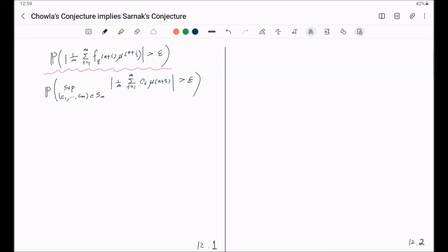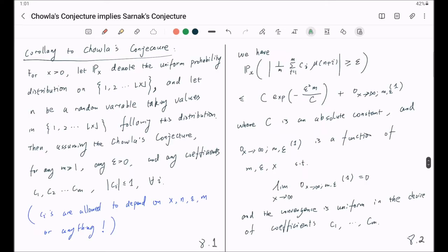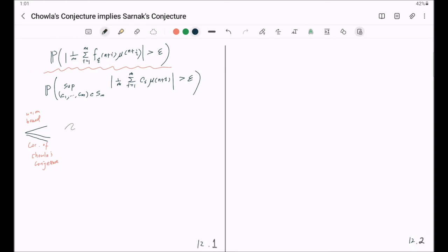By using a union bound, together with the corollary of the Chowla's conjecture we proved, recall that the corollary is this. It precisely gives this tail bound as follows. This will be less than or equal to the cardinality of S sub m, the domain where you choose those coefficients. Times, here is the corollary of Chowla's conjecture. This is bounded by.